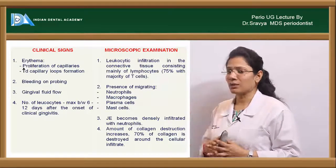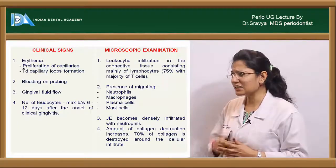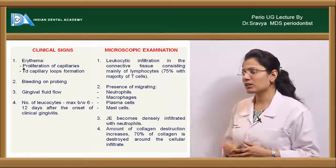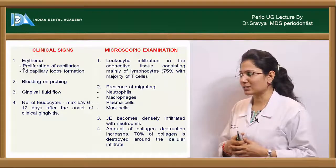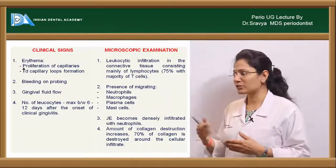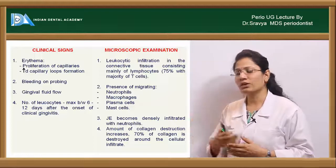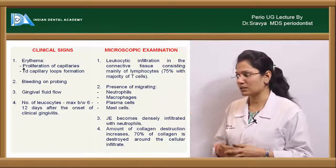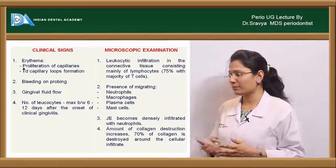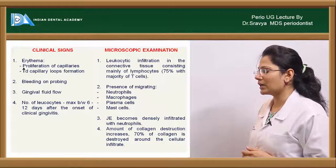The number of leukocytes reaches a maximum in about 6 to 12 days after the onset of clinical gingivitis, so this early lesion stage is called the clinical stage of gingivitis. Microscopically, there is leukocyte infiltration in your connective tissue, consisting mainly of lymphocytes — about 75% being T lymphocytes — plus migrating neutrophils, macrophages, plasma cells, and mast cells.